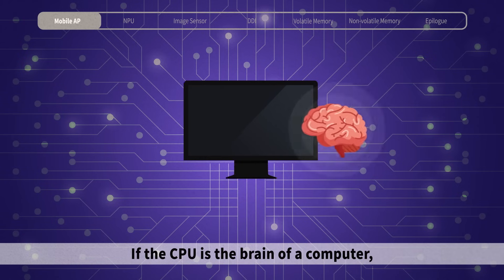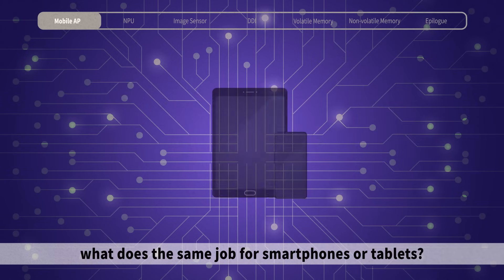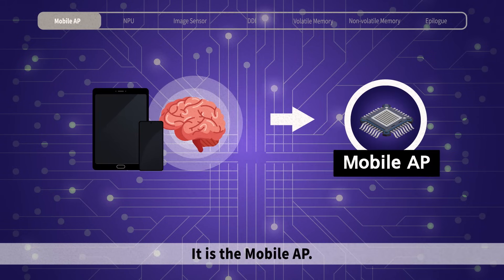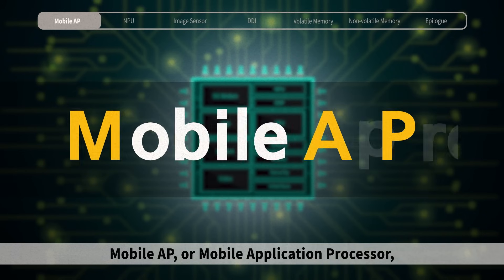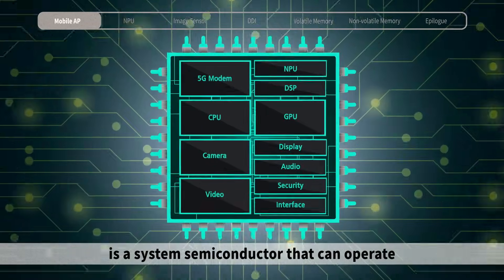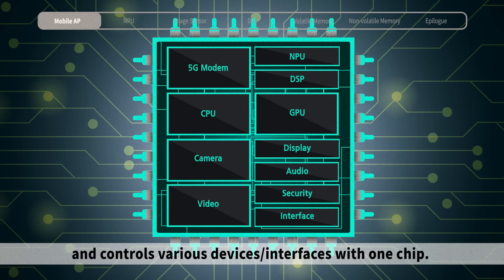If the CPU is the brain of a computer, what does the same job for smartphones or tablets? It is the Mobile AP, or Mobile Application Processor — a system semiconductor that can operate the necessary OS and applications, and controls various devices and interfaces with one chip.